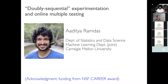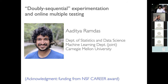Thanks everyone for joining. I know this has been a tumultuous week for UNC Chapel Hill — it's been in the news. We're going to go online ourselves next week. As you can see, my title has changed slightly — it now includes another phrase: doubly sequential experimentation. I'll explain what that is. I'd also like to acknowledge funding from the NSF Career Award.